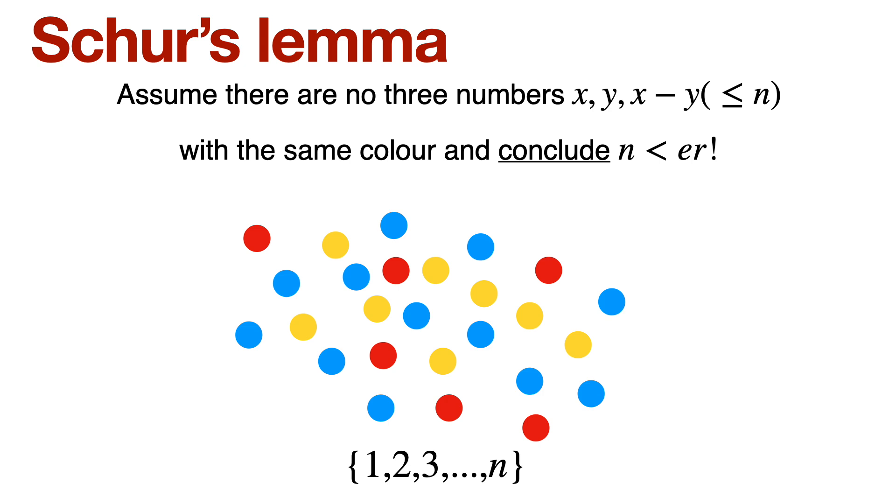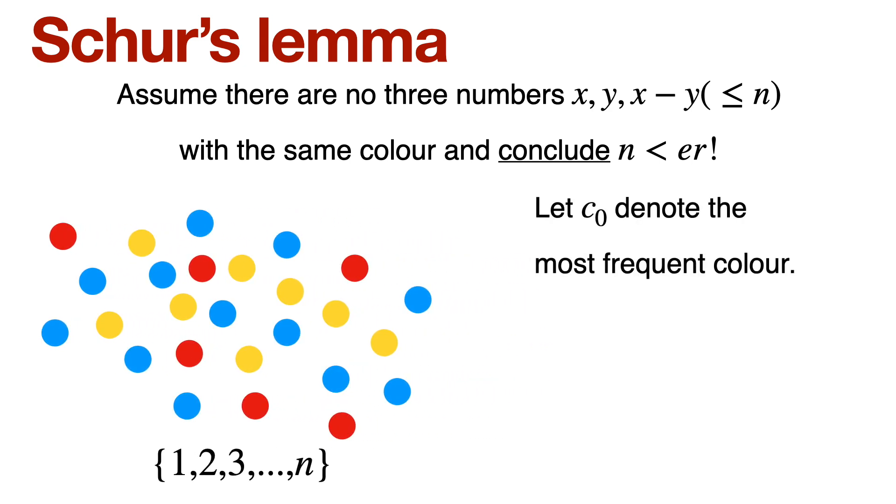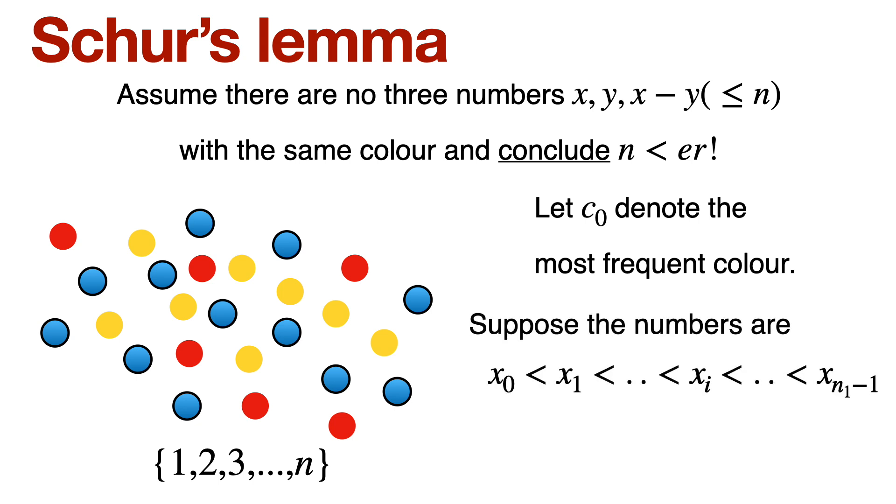And now we're going to show that we want to move towards the direction of proving n is less than er factorial. All right, the first step we're going to look at is the most frequent color. That is the one color that is appearing the most, okay? In our case, an example is blue, right? All right, so let C0 be the most frequent color. Now let's see what are all these numbers. After all, remember these all are elements of 1 to 3 up to n. So these blue blobs are all actually numbers. So let's list all these numbers in increasing order, okay? x0 is the smallest and xn1 minus 1 is the largest. So there are totally n1 such numbers colored with color C0 with x0 being the smallest.